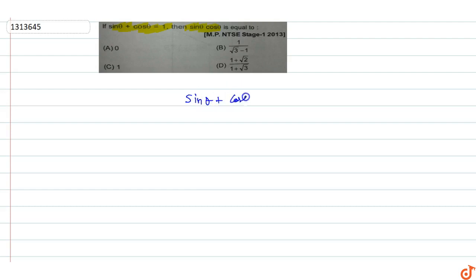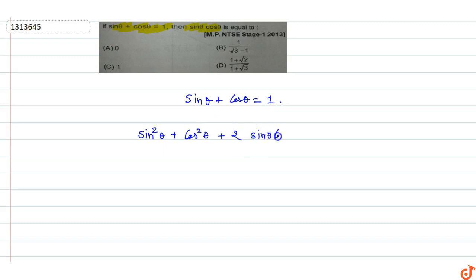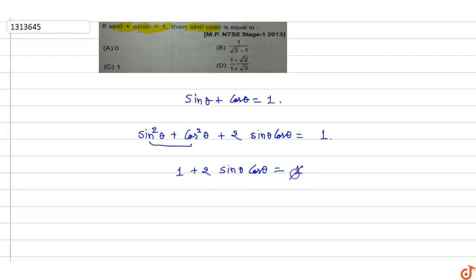Taking squares on both sides, this becomes sin²θ + cos²θ + 2·sin θ·cos θ = 1. Since sin²θ + cos²θ = 1, we get 1 + 2·sin θ·cos θ = 1. The 1s cancel out.